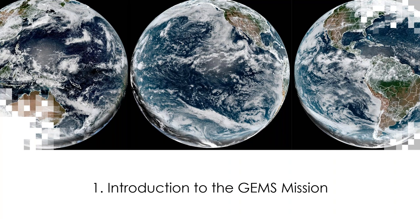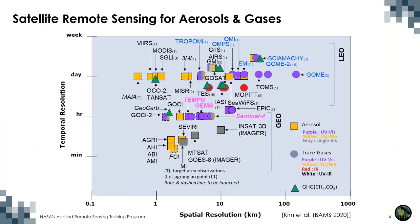First, an introduction to the GEMS mission. As a historical perspective, this figure summarizes the capabilities of satellite instruments measuring atmospheric composition using remote sensing with respect to temporal and spatial resolution. Historically, in the late 1970s, total ozone was measured successfully by the SBV and the TOMS instruments.